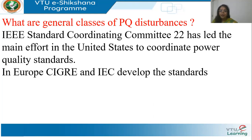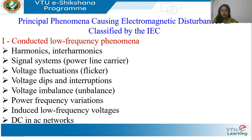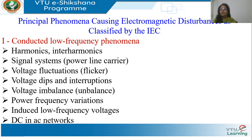In Europe, CIGRE and IEC are the two bodies which develop the standards. Now let us see what are the various classes that cause electromagnetic disturbances. This classification was given by IEC, which is a European organization. The classes have been divided, and in each class there are a number of power quality issues.